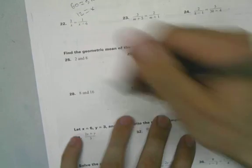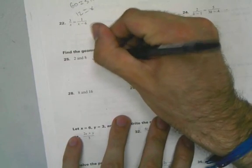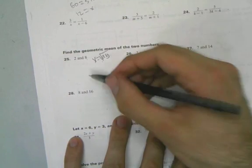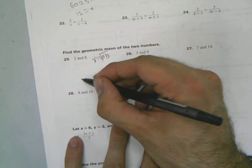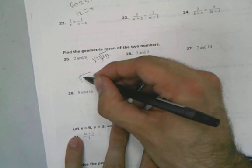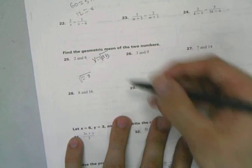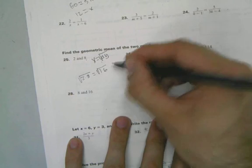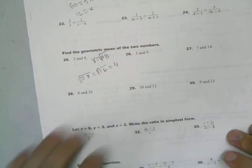Down here geometric mean. We know that x is going to equal square root of ab. There's 2 and 8. And that's the a and the b. So that's going to be the square root of 2 times 8, which equals the square root of 16, which equals 4.